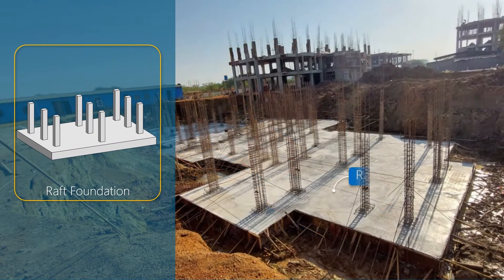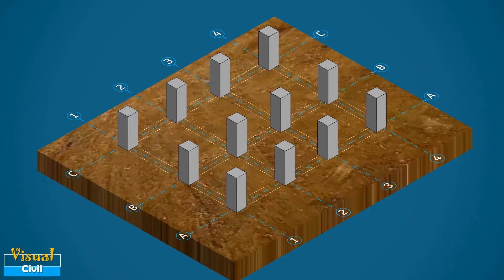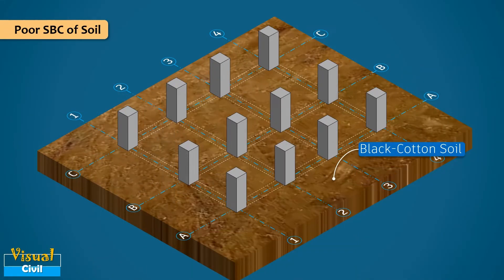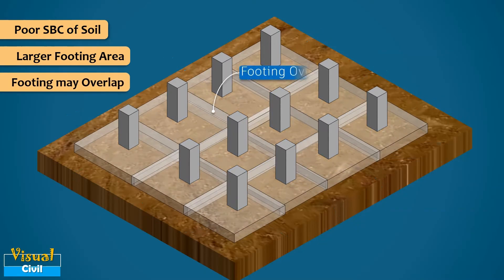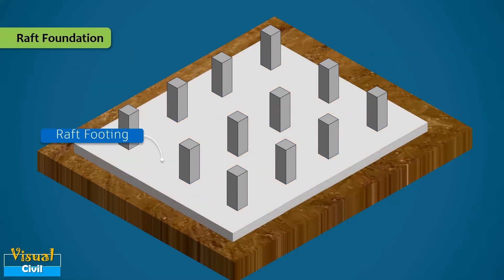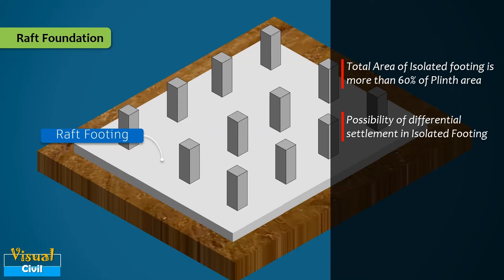Now let us understand the next type of shallow foundation: raft or mat foundation. When the bearing capacity of foundation soil is low, such as black cotton soil, the size of isolated footing will be comparatively larger, and there may be chances of overlapping of individual footings, leading to a raft foundation. Raft foundation is useful when: the total area of isolated footing would be more than 60% of the total ground area beneath the structure; there is a possibility of differential settlement if individual footing is used; or when soil strata are unpredictable and contain pockets of compressible soil.